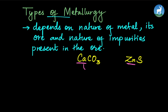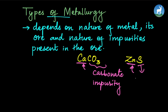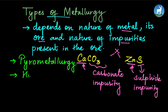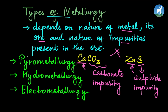For example, calcium carbonate and zinc sulfide (ZnS): in the case of calcium carbonate we have CO3 impurities, while zinc sulfide has different impurities. Because of this, we use different methods. The three types of metallurgy are: Pyrometallurgy, Hydrometallurgy, and Electrometallurgy.